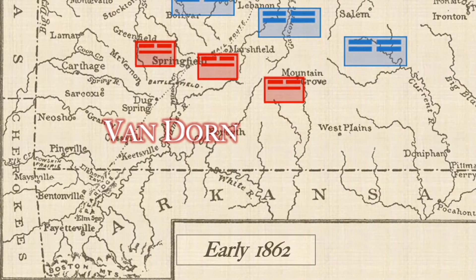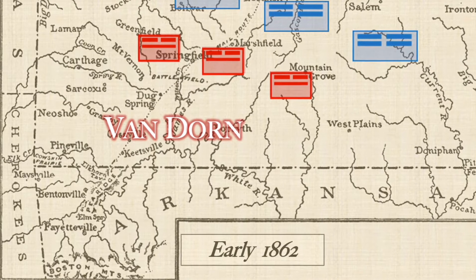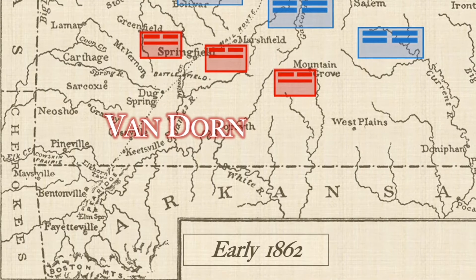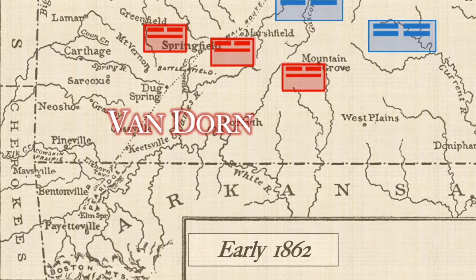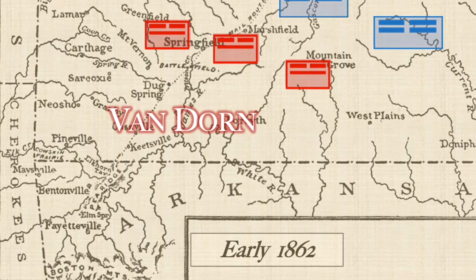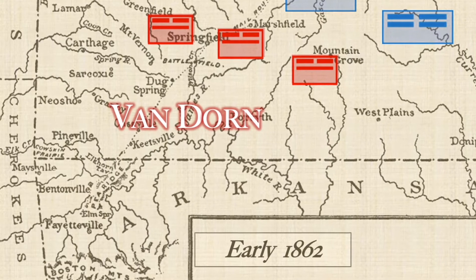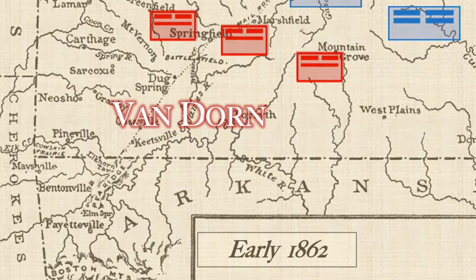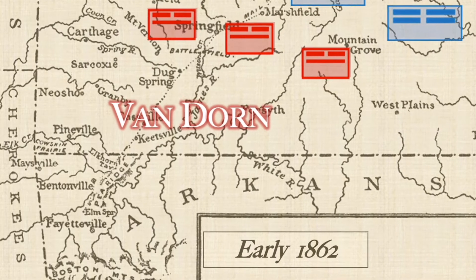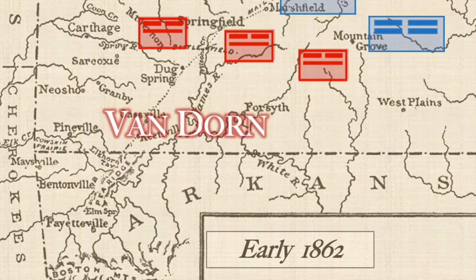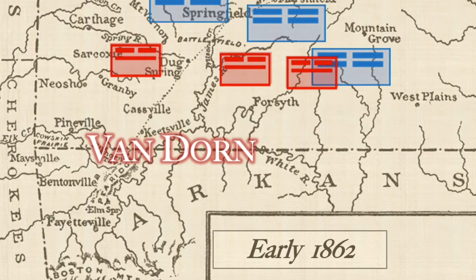Throughout early 1862, Union forces under Samuel Curtis, who was appointed by Halleck over the somewhat more popular Franz Siegel, pushed back Van Dorn south and west through Missouri. As the United States forces in late 1861 and early 1862 pushed back the Missouri State Guard under Sterling Price, command was given to Van Dorn.